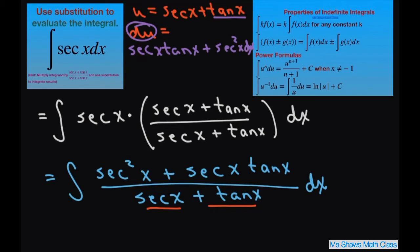Now we can substitute this back in. Let's look at it before we move on. We have our u is secant x plus tan x.